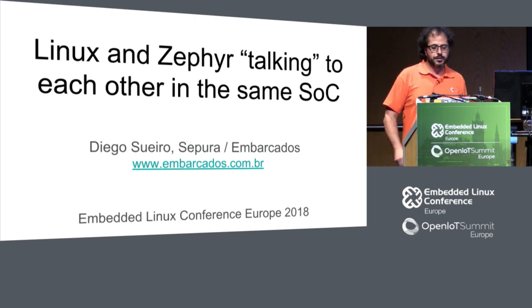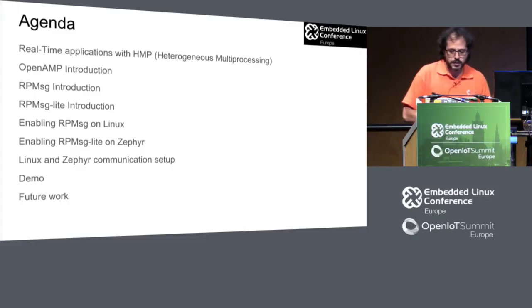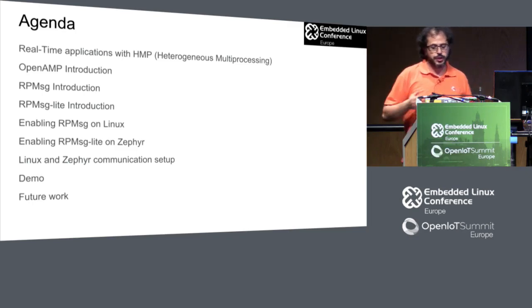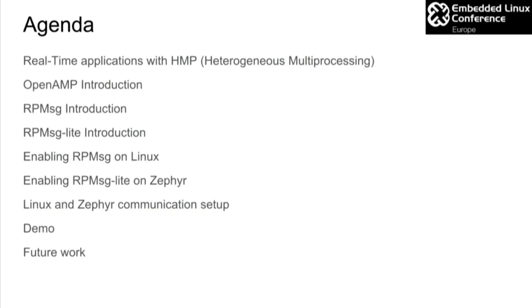First of all, I'm sorry about my terrible English, but I hope you'll be able to understand what I am trying to pass to you. So this is going to be our agenda. First, we are going to talk about heterogeneous multiprocessors in real-time applications. Then we will introduce OpenAMP, then RPMSG.